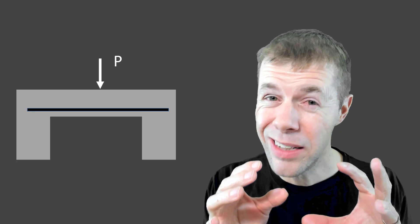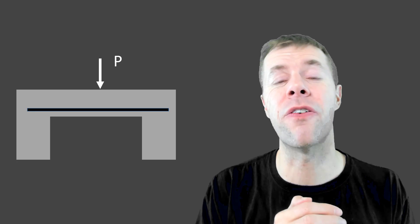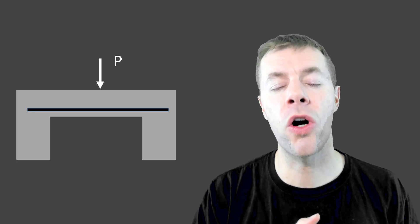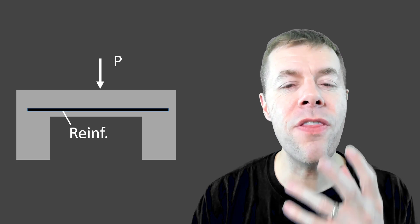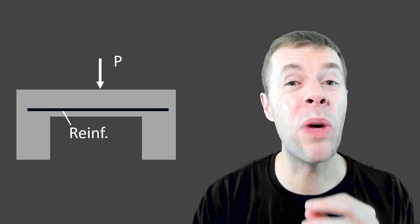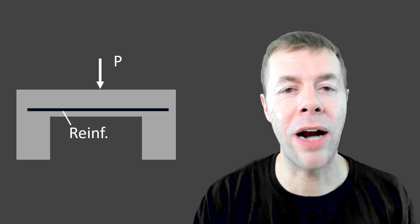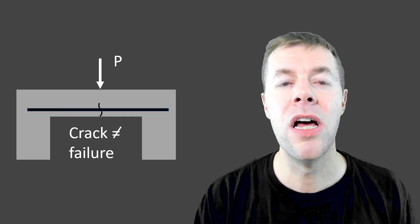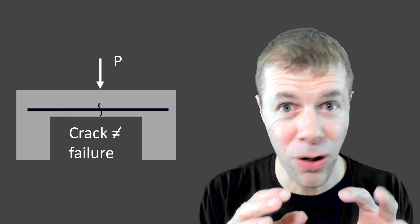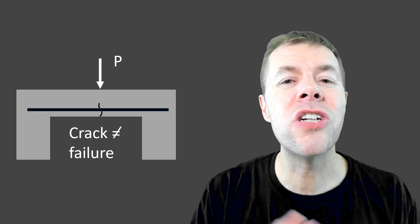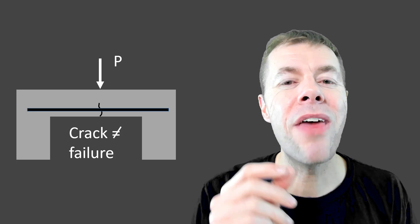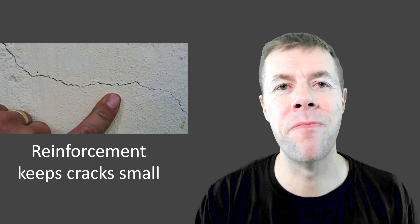Modern designs are a little bit different. We're expecting the concrete to crack. We put reinforcement inside of it, though, in the spots where we think the cracks are going to happen. So once the crack does occur, it's not failure — it's just a step in the life of the beam.